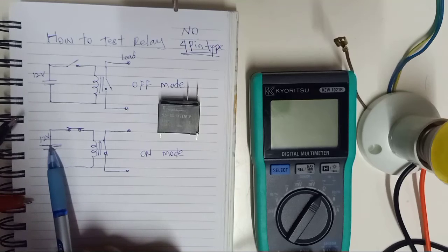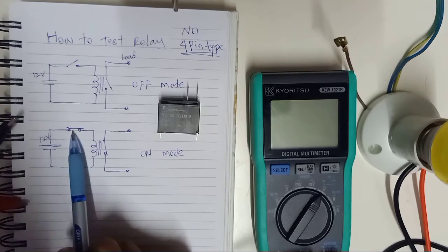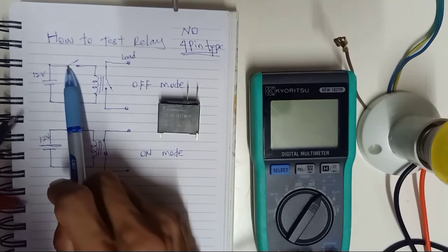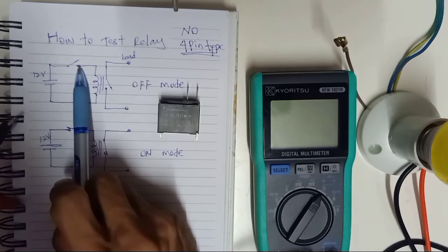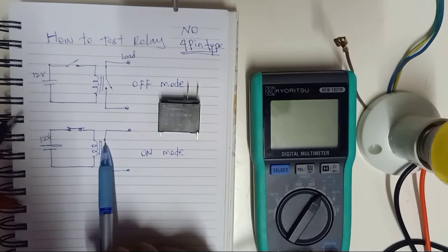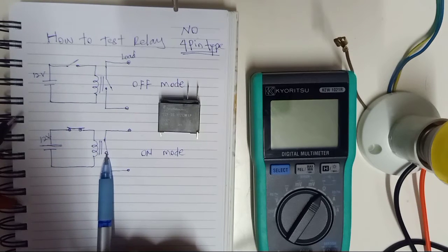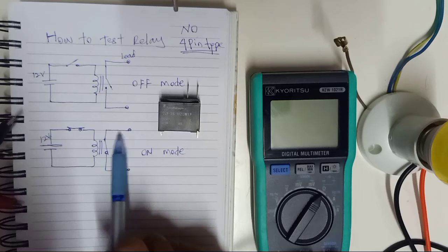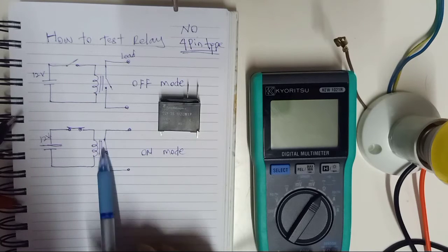But if you supply 12-volt here, the coil will turn on and the magnet is already turning on, so the loop can conduct current through here.